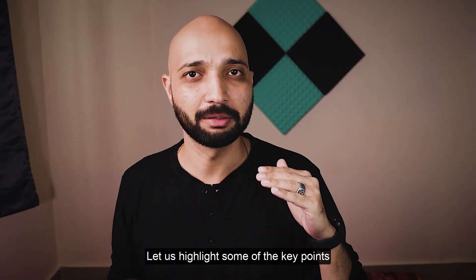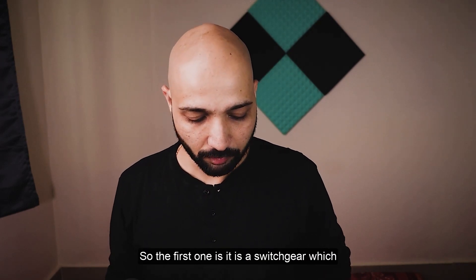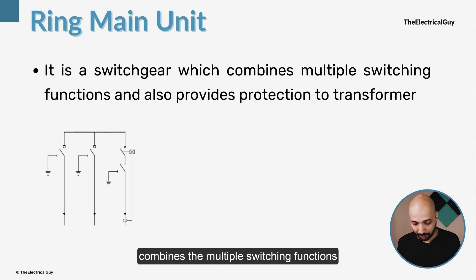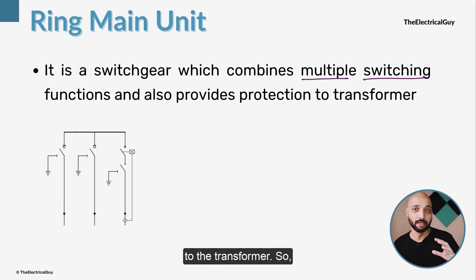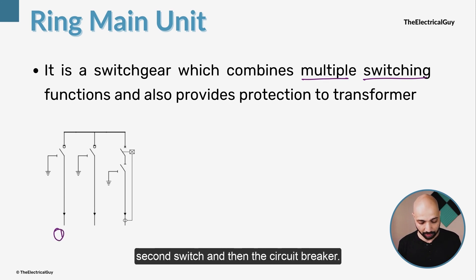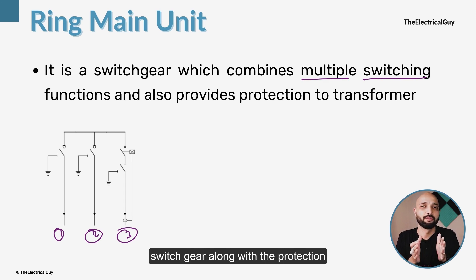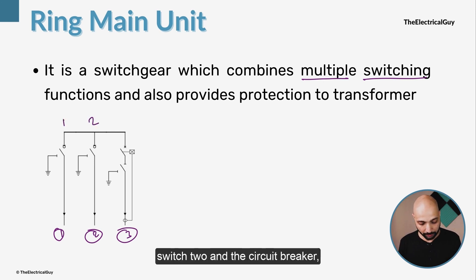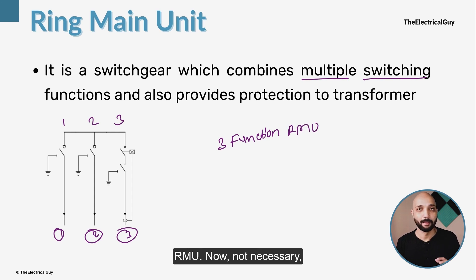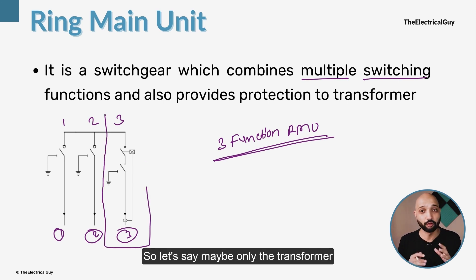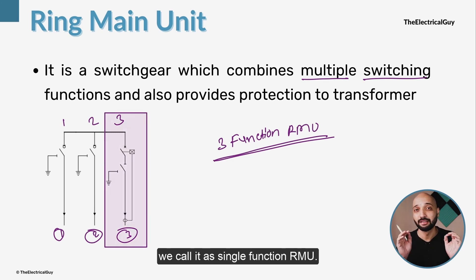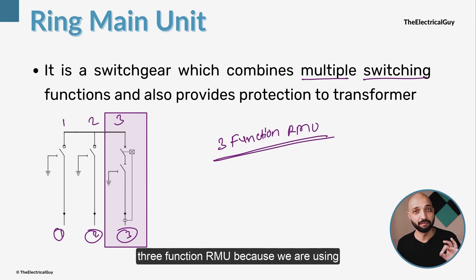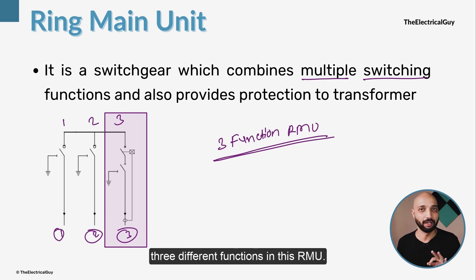Key points about the Ring Main Unit: first, it is a switchgear that combines multiple switching functions and provides protection to the transformer — combining switch one, switch two, and the circuit breaker. Because it has three different functions, it is called a three-function RMU. Not all RMUs are three-function; some may have only one function, such as only transformer protection, and those are called single-function RMUs.